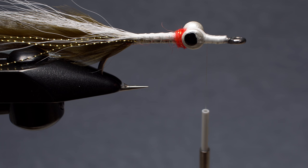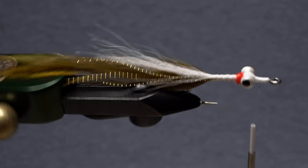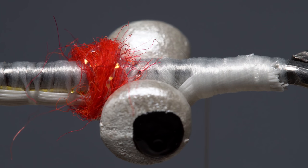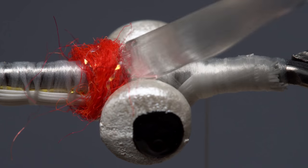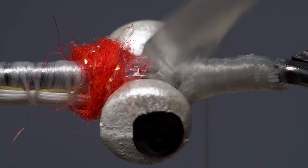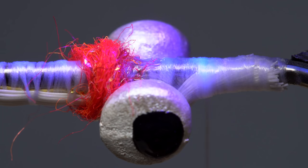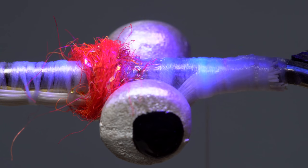Position your tying thread immediately in front of the dumbbell eyes, then once again turn the hook upside down. If you like, now's a good time to apply an ample drop of UV cure resin to all those thread wraps beneath the eyes. A healthy shot of UV light will further lock the dumbbell eyes to the hook shank.